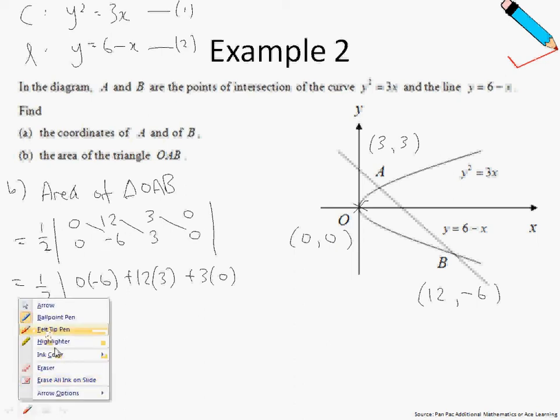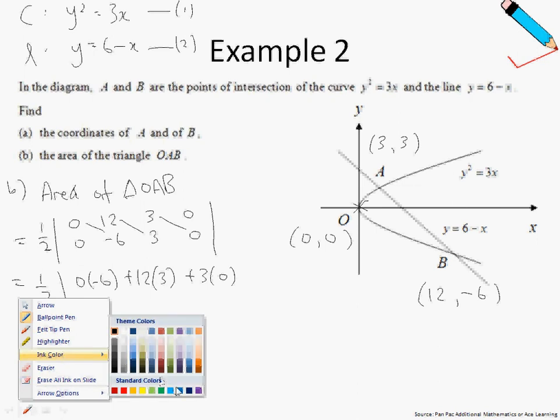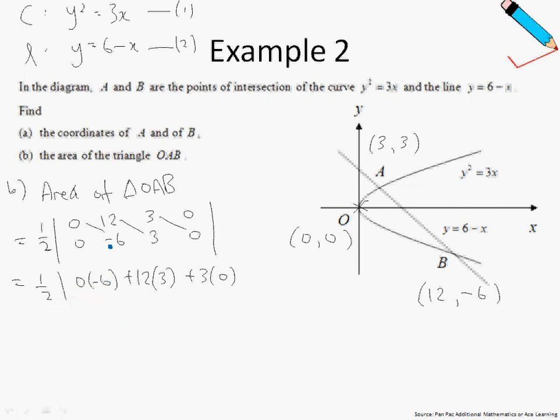And the next thing I'm going to do is to subtract these numbers. So I will subtract 0 times 12, and then I'll subtract negative 6 times 3, so subtract negative 6 times 3, and then I'll subtract 3 times 0. Close modulus.